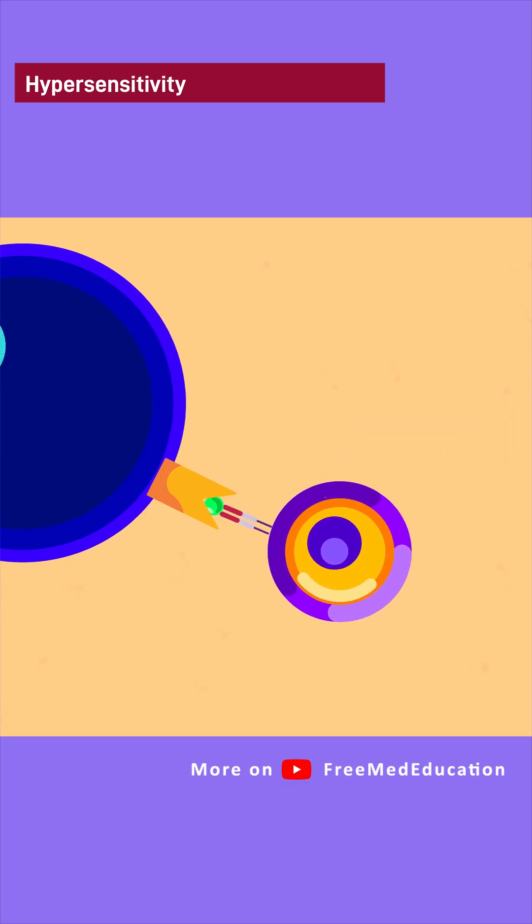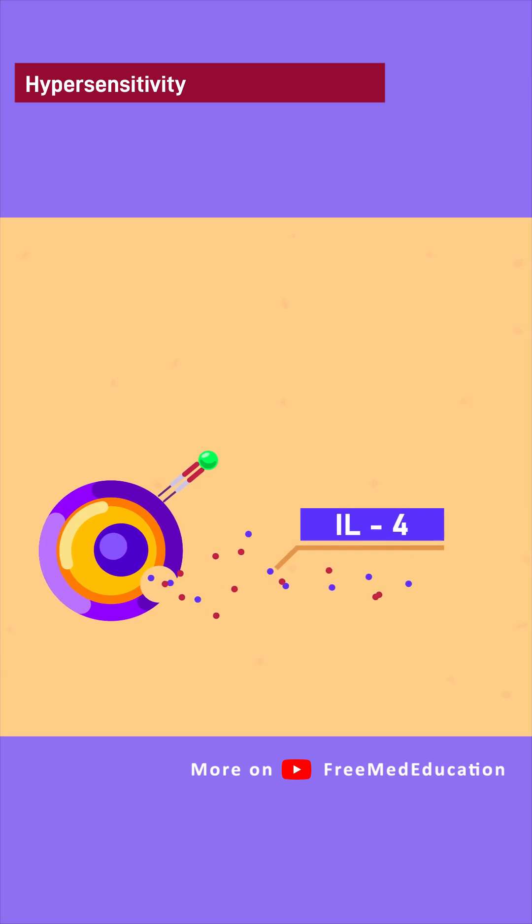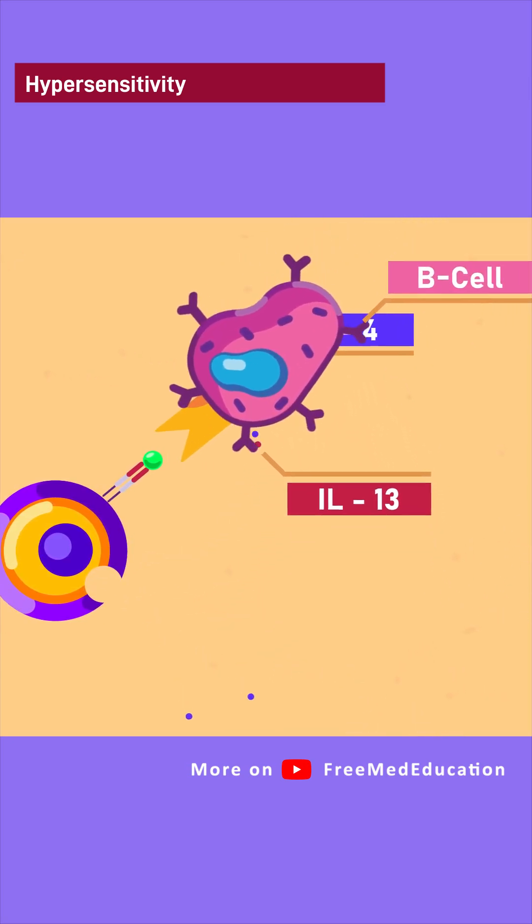The Th2 cells will release interleukins, such as IL-4 and IL-13, that stimulate B cells.